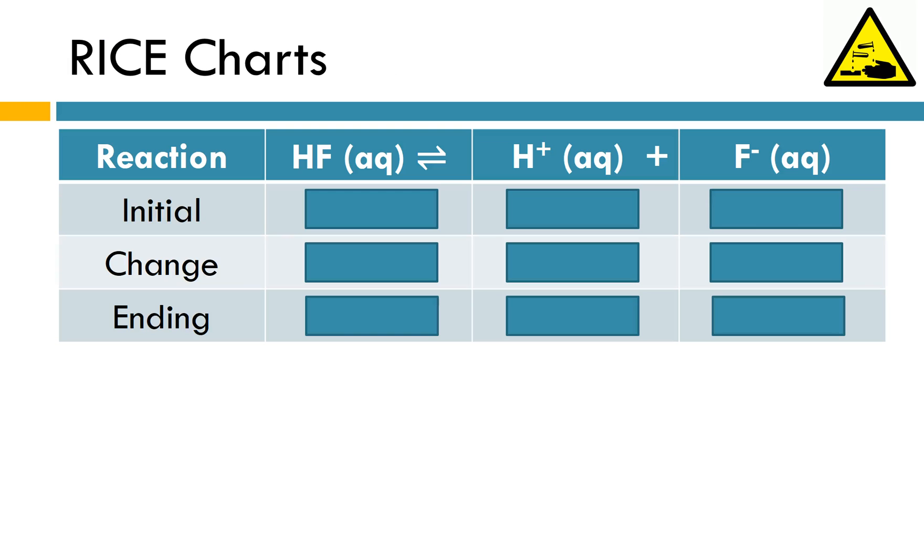We're going to make something called a RICE chart. RICE is reaction, initial concentration, change in concentration, and then the end or ending concentration. So I've got my reaction, and I've got everything broken up into columns. Initially, when you first put the HF in the water, you have a concentration of 0.5 molar HF, and you don't have any of your ions produced just yet. Once dissolved, we know the HF is going to start to break apart, at least some of the HF molecules. So are we going to see an increase in the concentration of HF or a decrease? Well, it's going to be breaking apart to make ions, so that's going to lower the concentration.